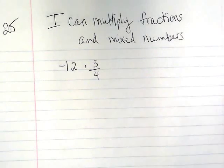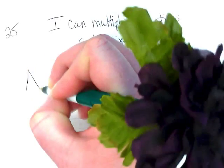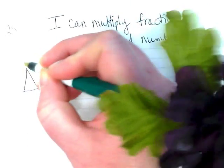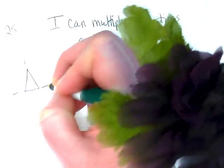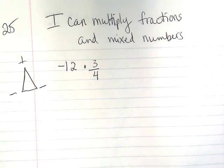So we have a few things to remember here. Let's make our triangle on the side to remind us we are multiplying positive and negative numbers. So those rules still apply.